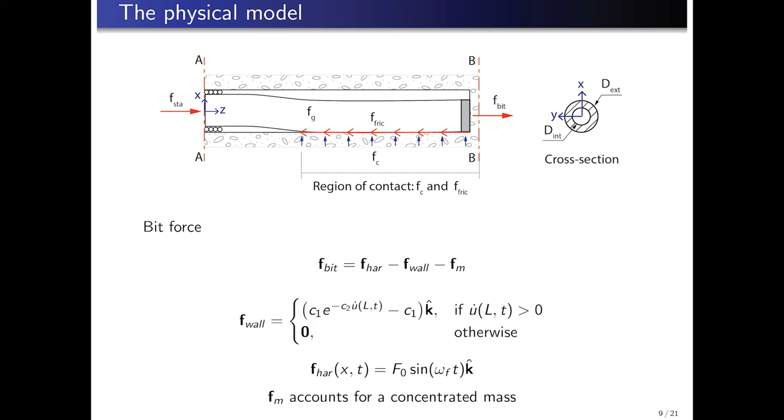F_wall is a force that represents the interaction between the bit and the walls. The force follows the same exponential law employed in the reference paper. F_r is a harmonic force, while the frequency employed in its definition is related to the frequency of operation of the mud motor. And F_m represents the force associated to the inertial effect of the concentrated mass due to the bit.